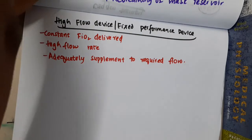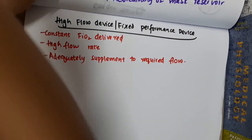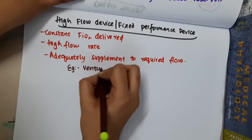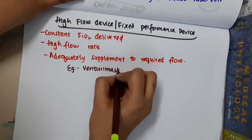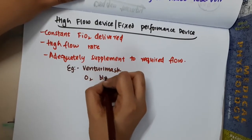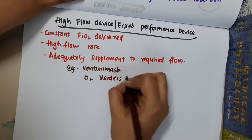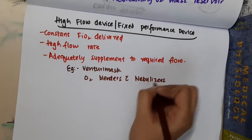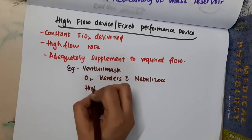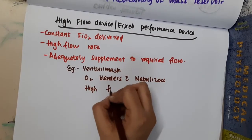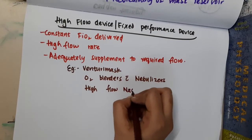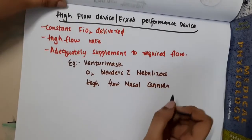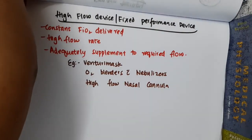Examples of high flow devices are: Venturi mask, oxygen blenders with nebulizers, and high flow nasal cannula.